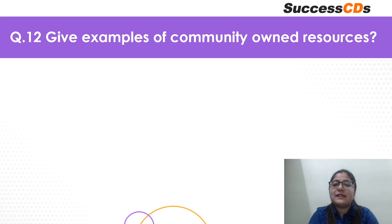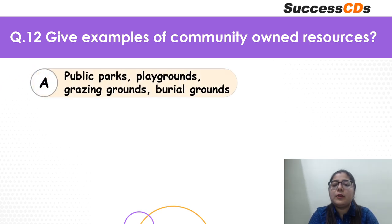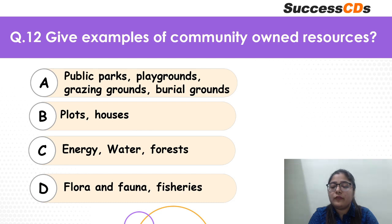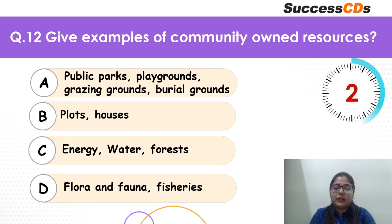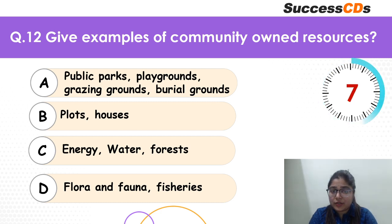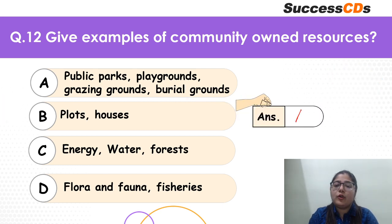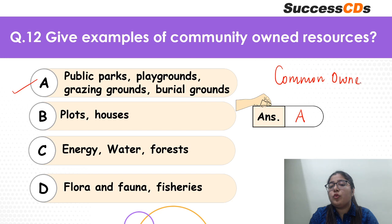Let's move to question 12: give examples of community-owned resources. Public parks, playgrounds, grazing grounds, burial grounds? Plots and houses? Energy, water and forests? Or flora and fauna, fisheries? Very very easy — just the opposite of the previous question. The correct answer is definitely option A.